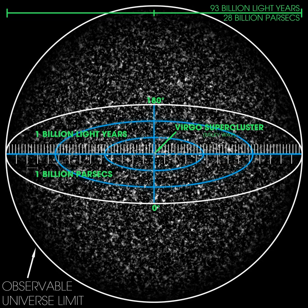The co-moving distance from Earth to the edge of the observable universe is about 14.26 gigaparsecs (46.5 billion light-years) or 4.40×10²⁶ m in any direction. The observable universe is thus a sphere with a diameter of about 28.5 gigaparsecs (93 billion light-years) or 8.8×10²⁶ m. Assuming that space is roughly flat in the sense of being a Euclidean space, this size corresponds to a co-moving volume of about 1.22×10⁴ Gpc³, 4.22×10⁵ Gly³, or 3.57×10⁸⁰ m³.